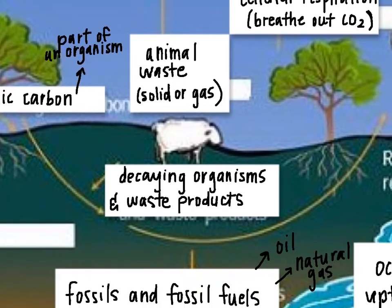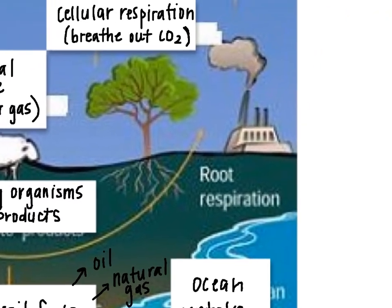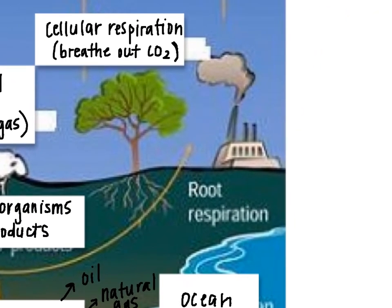After carbon goes into the soil, it can become a part of fossils, and eventually part of fossil fuels like oil and natural gas. This takes a long time, but this is part of where carbon can go. Those fossil fuels can then be used in something like a factory later on.